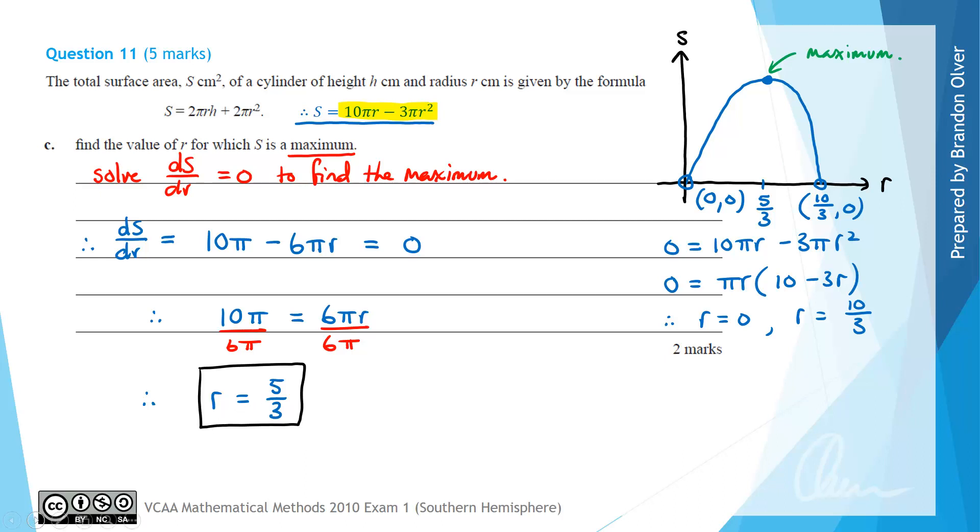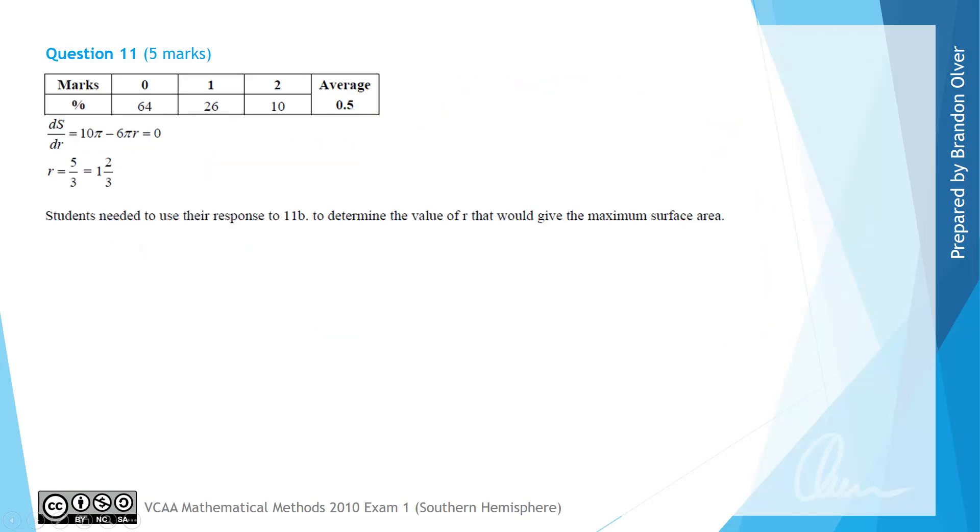And just a reminder that for this question the justification wasn't actually required but it does help for us to know that we did find a maximum. So finally looking at the examiner's report for this part of the question we can see that students needed to use their response from 11b to determine the value of r that would give a maximum surface area. So once again even if you hadn't quite got part A and B correct, if you used a reasonable answer you could progress through this question.